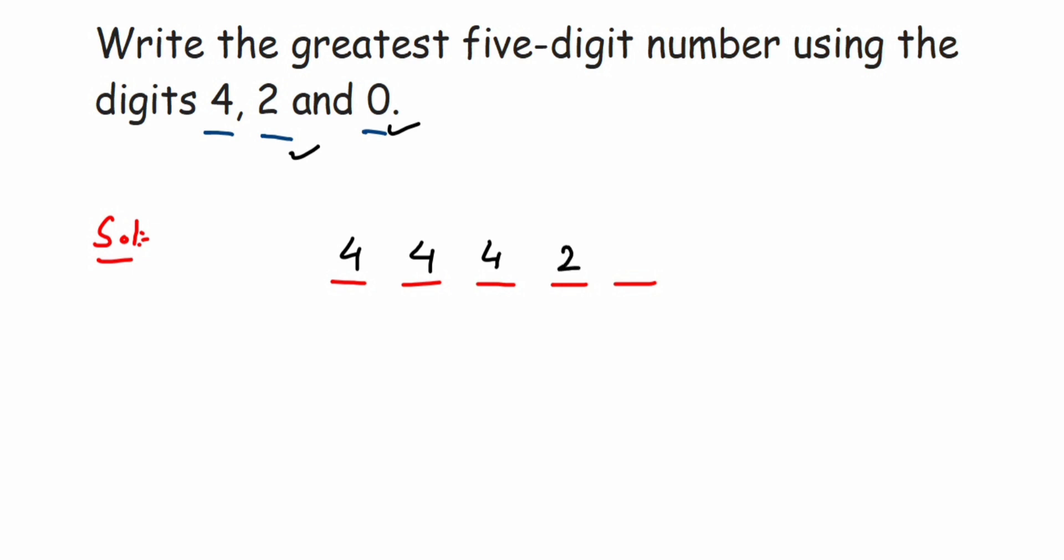And the last will be 0. So I hope it's clear why we have taken three 4s in the beginning and then followed by 2 and 0. This will be the answer: forty-four thousand, four hundred twenty.